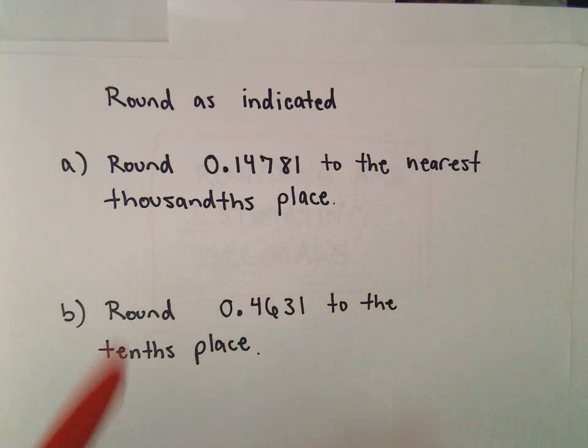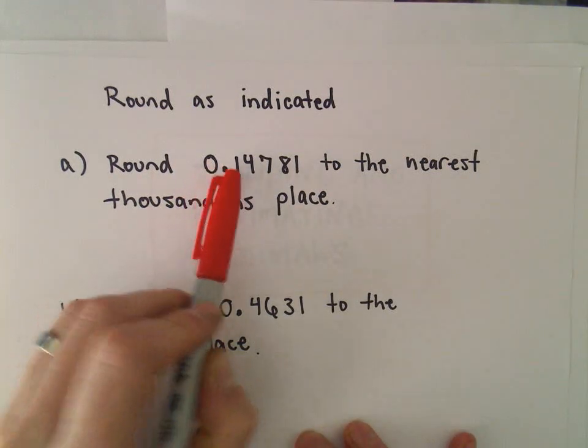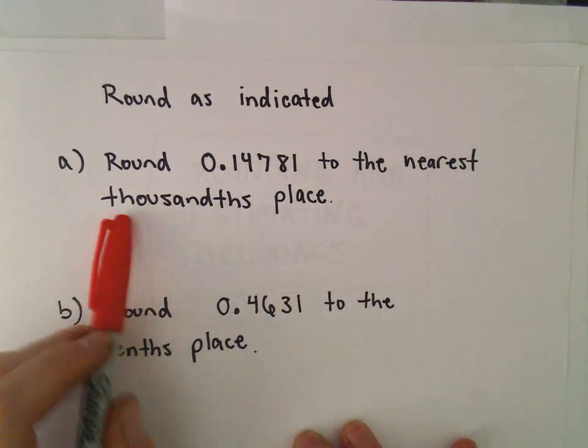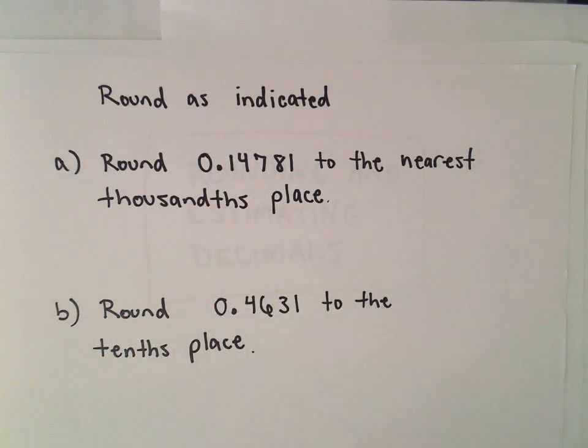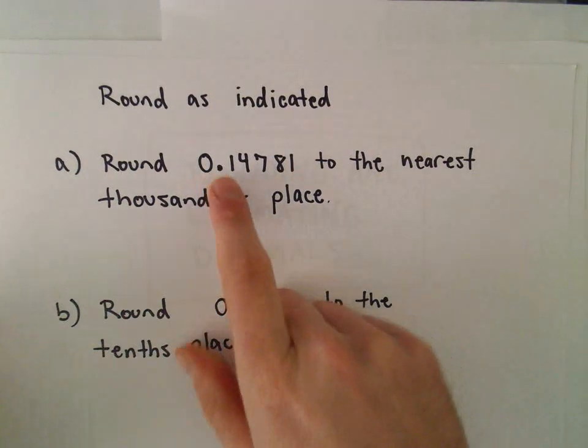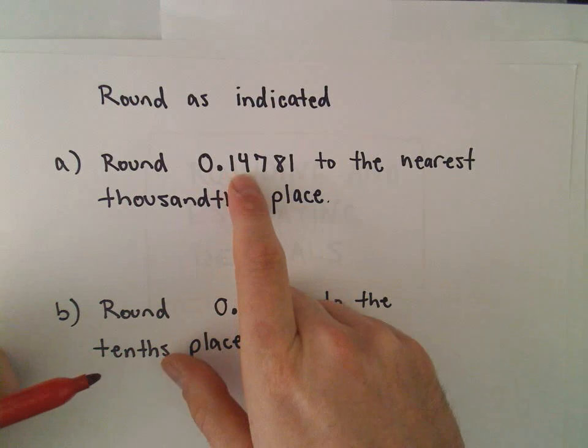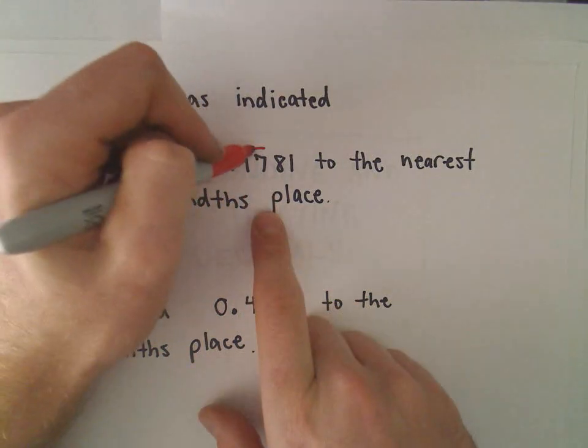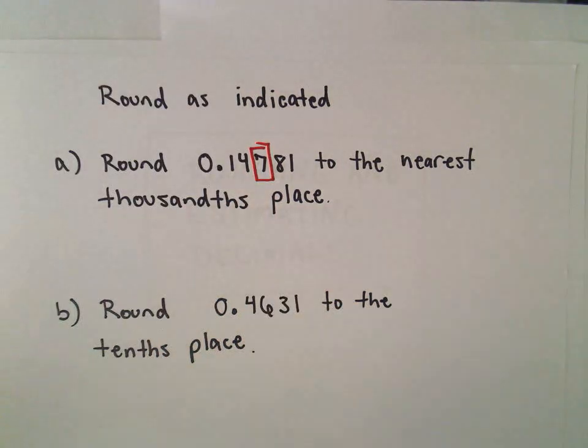So in part A here, we're going to round 0.14781 to the nearest thousandths place. Okay, so we've got tenths, hundredths, thousandths. So that would be our thousandths place, the 7.